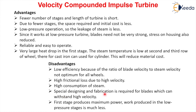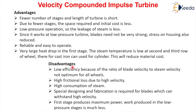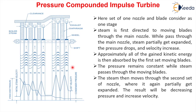Special design and fabrication is required for blades that can withstand high velocity. The first stage produces maximum power, but work produced in the low-pressure stages is much less, so to get constant power output (e.g., 50 MW), steam consumption by this turbine will be very high. These are the disadvantages of the velocity compounded impulse turbine.